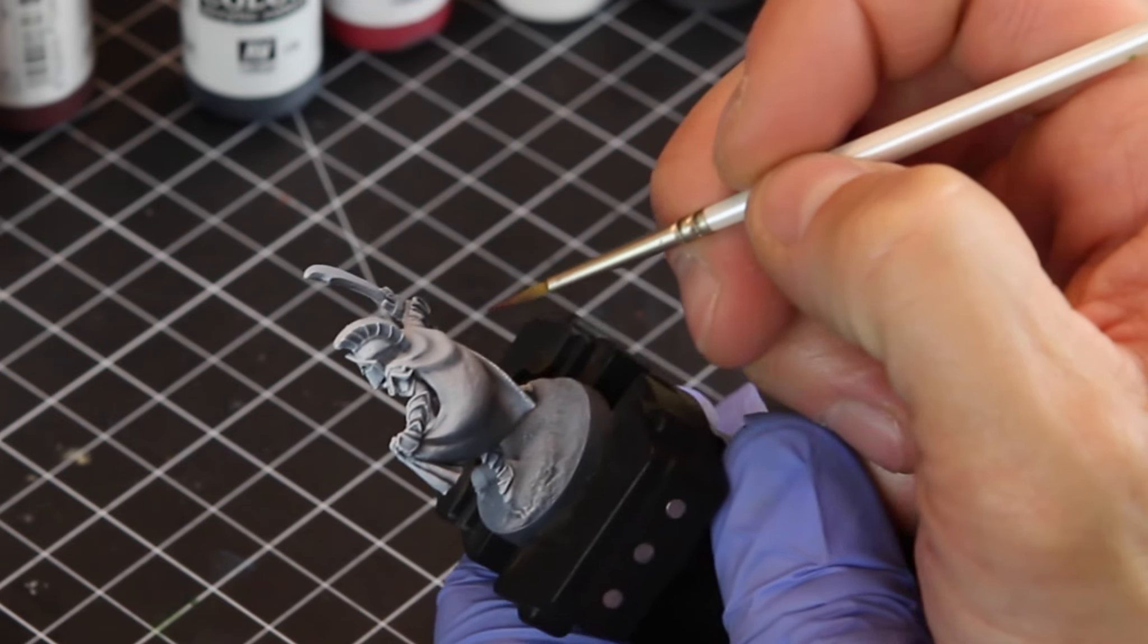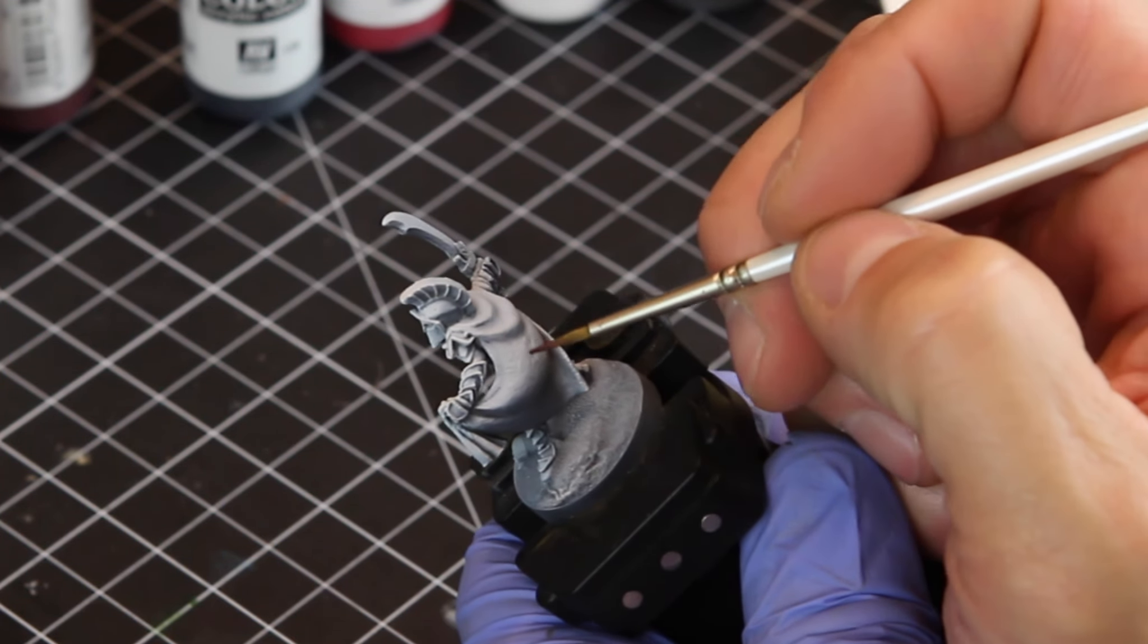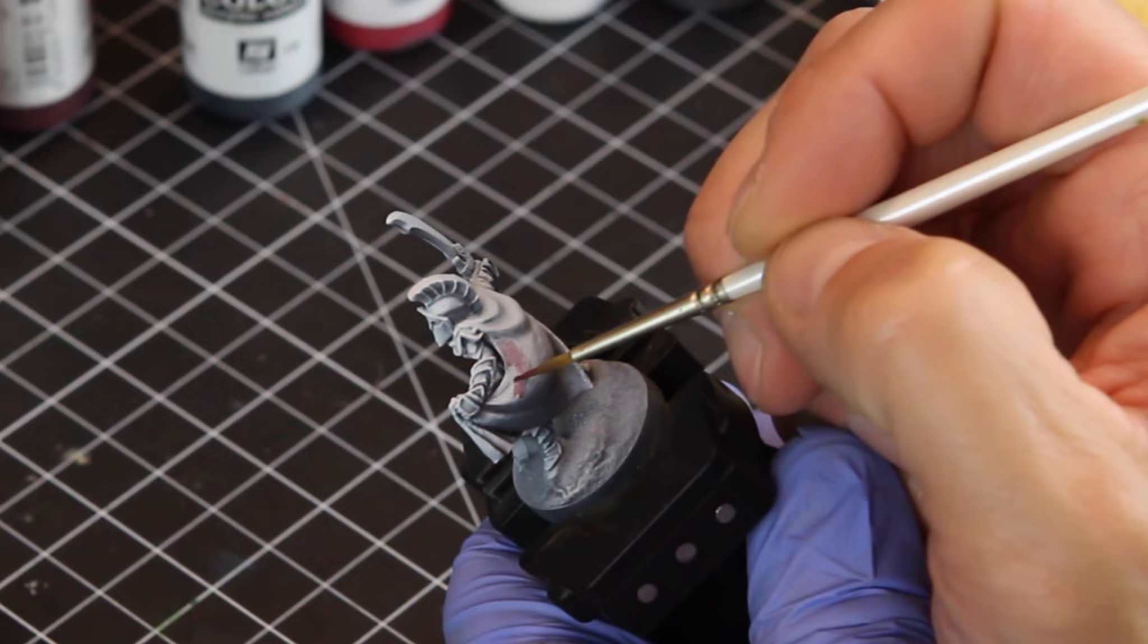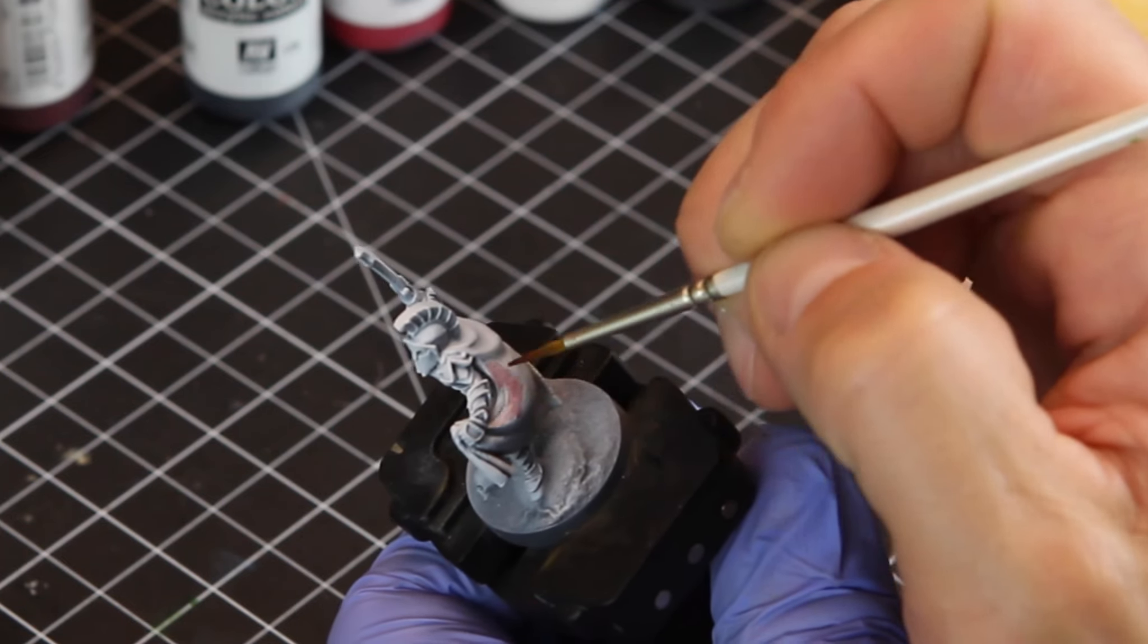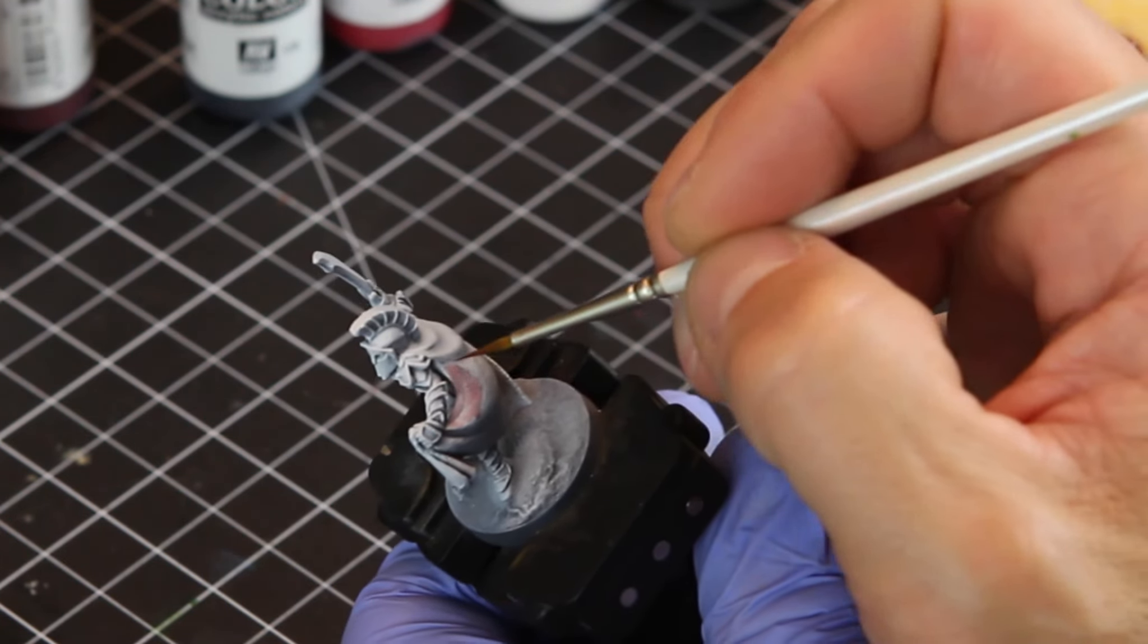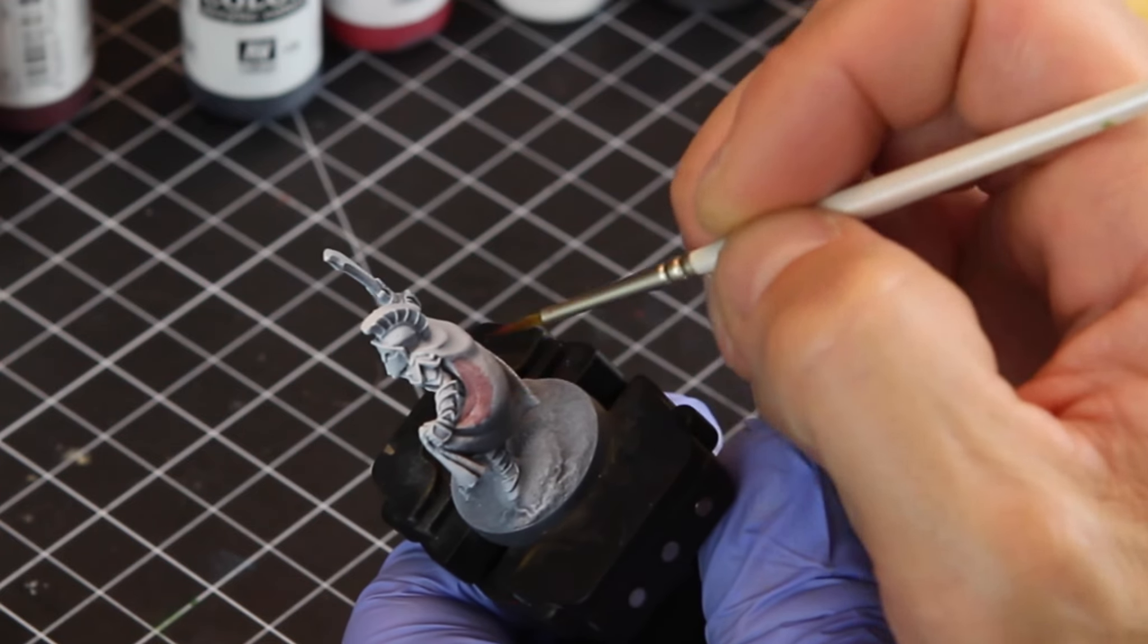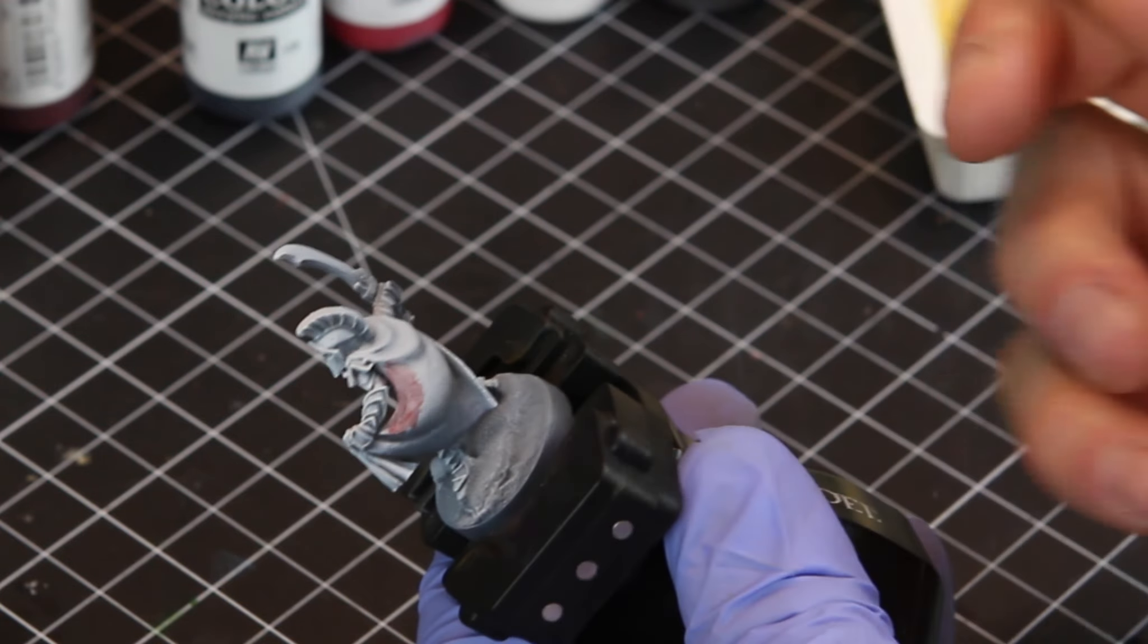Okay, so our first technique here is going to be a glaze. It's basically just a very watered down paint. About a 6 to 1 water to paint ratio is what I like to do. And this is just to give you an idea of actually how thin that paint is going to be when we're applying it.